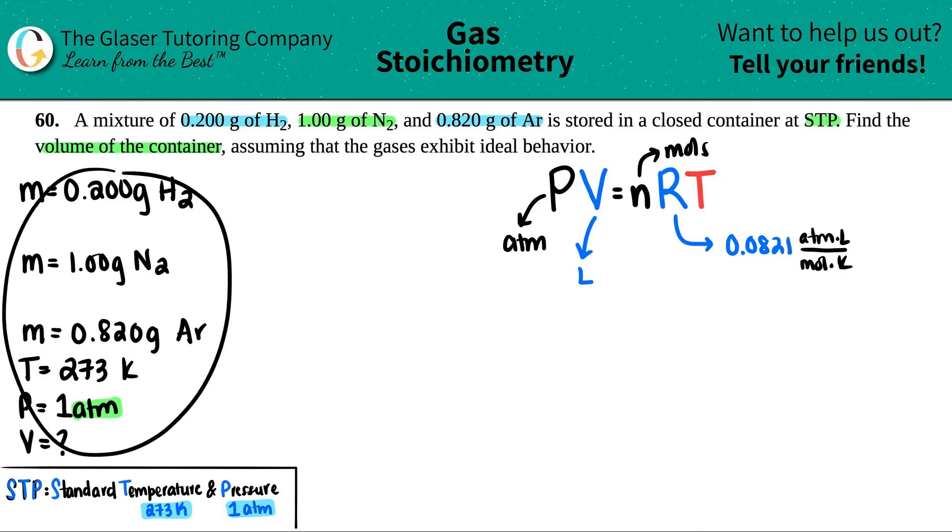But I don't see any mole values here, so maybe I'll just skip that for now. The R value we have, and the temperature (capital T) has to be in Kelvin - and thank goodness at STP it's just best to memorize 273 Kelvin. So now how am I going to get the moles? Because we want to solve for the volume.